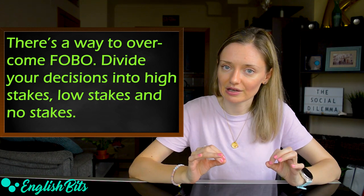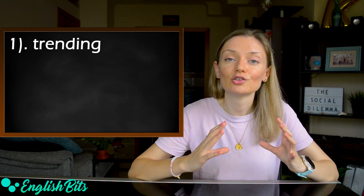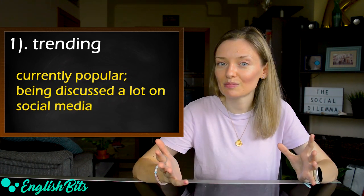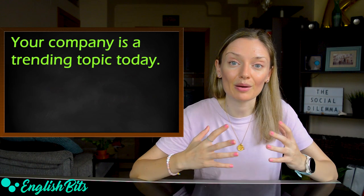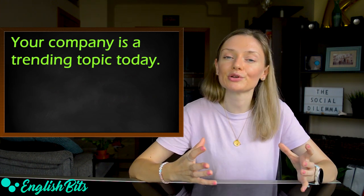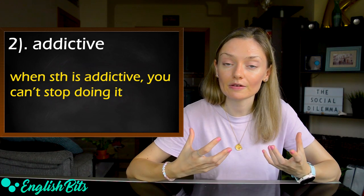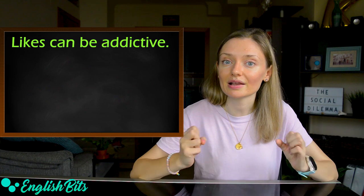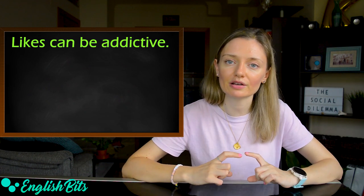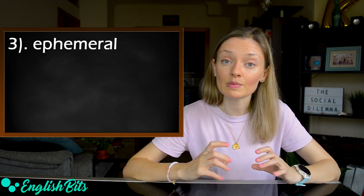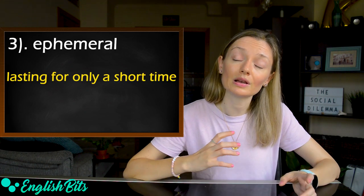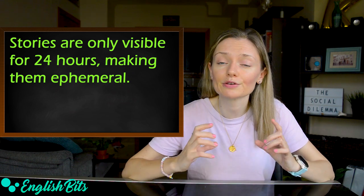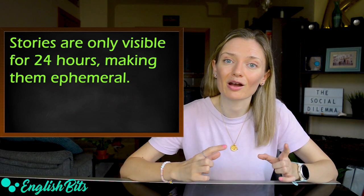And now listen on to adjectives. Number one: trending. It means extremely popular. For example, your company is a trending topic today. Number two: addictive. When something is addictive, you can't stop doing it. For example, likes can be addictive. And one more adjective: ephemeral. It means lasting for only a short time. For example, stories are only visible for 24 hours, making them ephemeral.